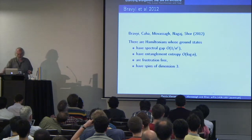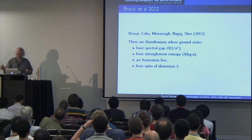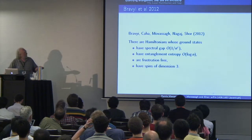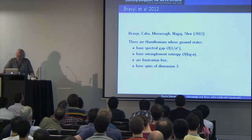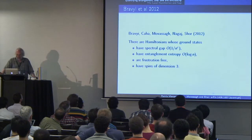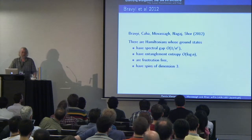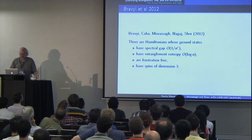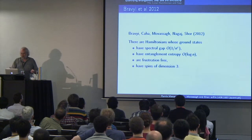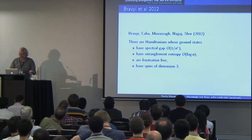In 2012, which is really the precursor to this work, we found Hamiltonians whose ground states have a polynomial spectral gap, entanglement entropy order log N, are frustration-free, and these are spin chains where the spins have dimension 3.